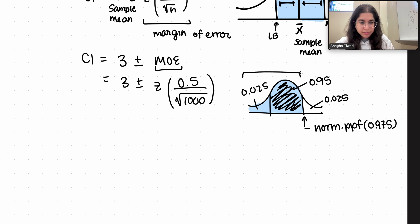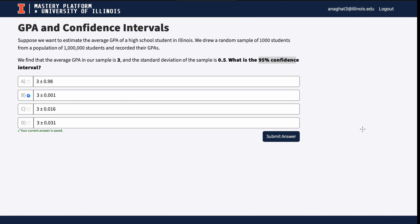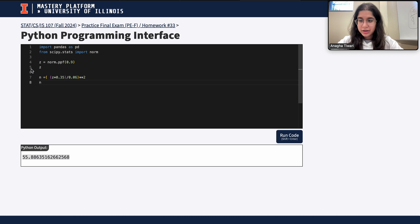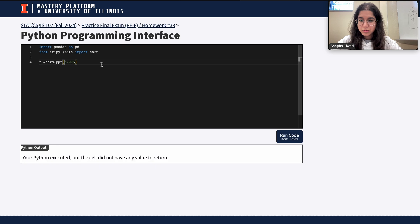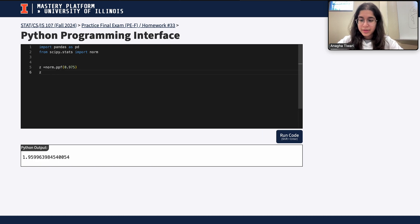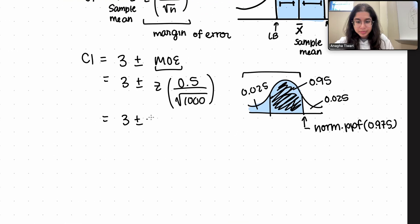Because this will be our area to the left, this basically blue highlighted region. So this is going to be 3 plus or minus, and to calculate that z score you can just use Python to calculate that. It's going to be z equals norm.ppf of 0.975. You can also do this entire problem in Python if that will be easier for you. So it's going to be around 1.96, it's going to be 1.9599 times 0.5 divided by square root of 1000.